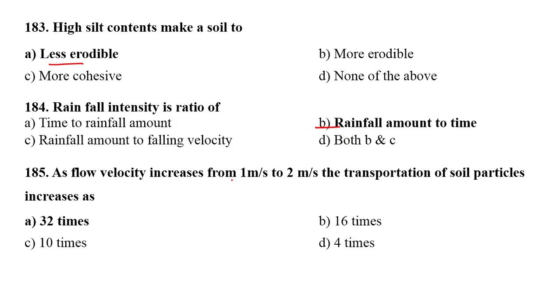As flow velocity increases from 1 m per second to 2 m per second, the transportation of soil particles increases 32 times.